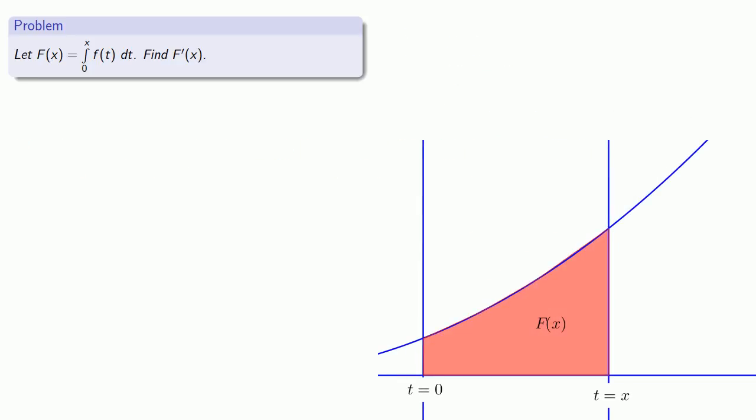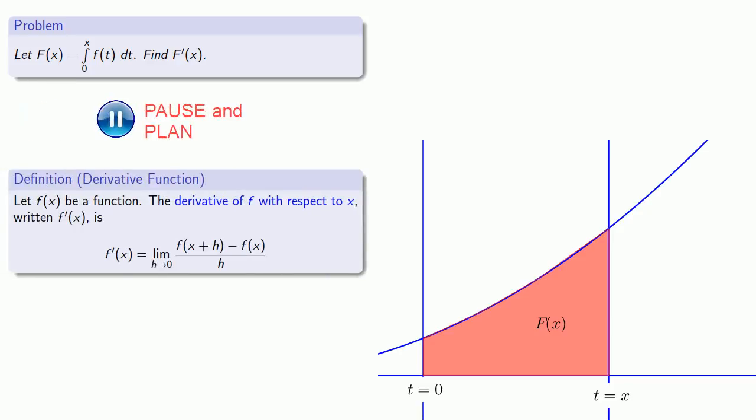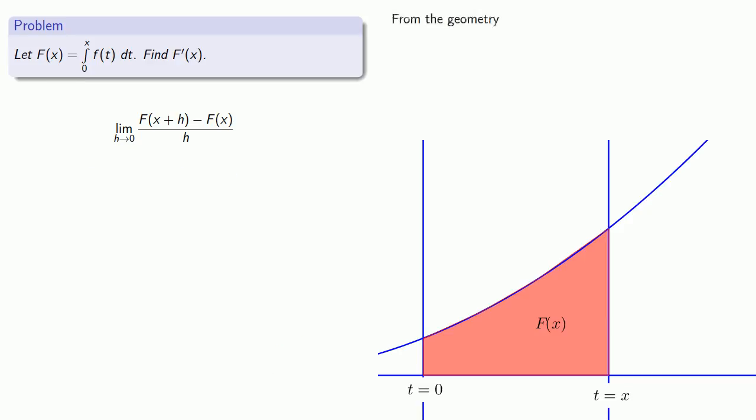Now if we want to find the derivative of capital F of X we need to use the definition of the derivative. And so we're looking for the limit as h goes to 0 of this difference quotient. Well let's consider the geometry. F of X plus H is the area under the curve relative to t equals x plus h. So this difference F of x plus h minus F of x represents this sliver of area between t equals x and t equals x plus h.